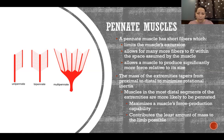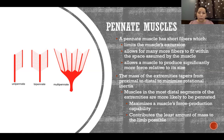The mass of the extremities tapers from proximal to distal to minimize rotational inertia. In this context, many distal muscles — in the forearms and calves — are pennate because we can generate more force with less muscle mass. This maximizes the muscle's force production capability while contributing the least amount of mass to the limb, which is important because more distal mass makes movement much more difficult.